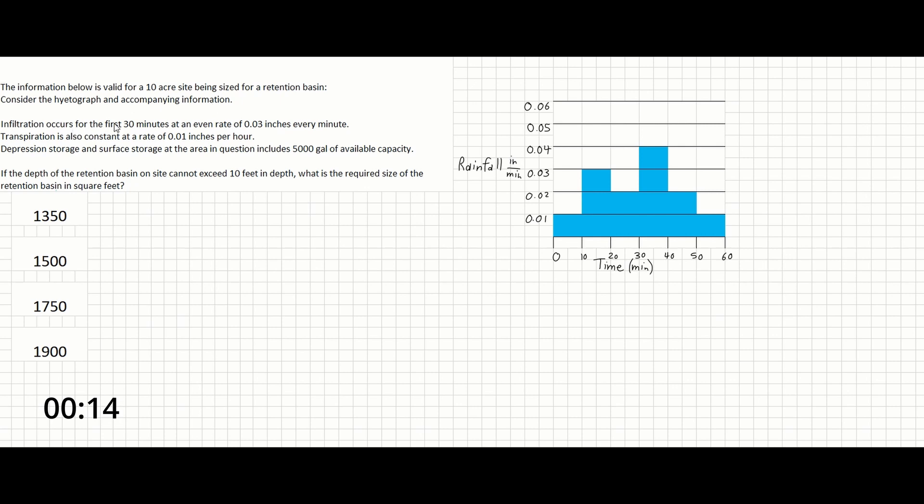Infiltration occurs for the first 30 minutes at an even rate of 0.03 inches every minute. Transpiration is also constant at a rate of 0.01 inches per hour. Depression storage and surface storage in the area in question includes 5,000 gallons of available capacity.